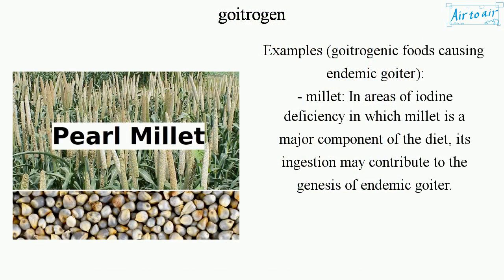Examples of goitrogenic foods causing endemic goiter include millet. In areas of iodine deficiency where millet is a major component of the diet, its ingestion may contribute to the genesis of endemic goiter.